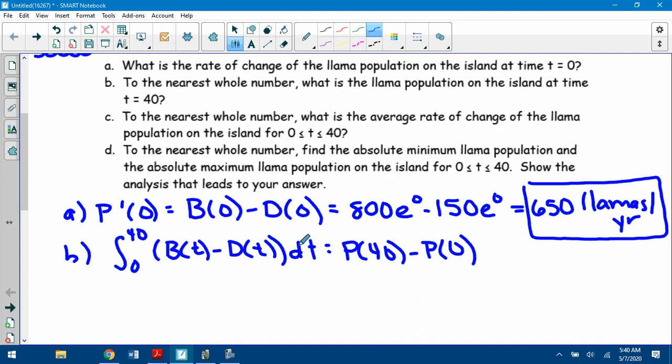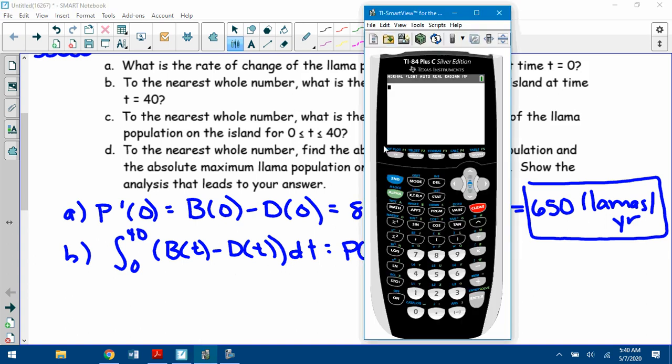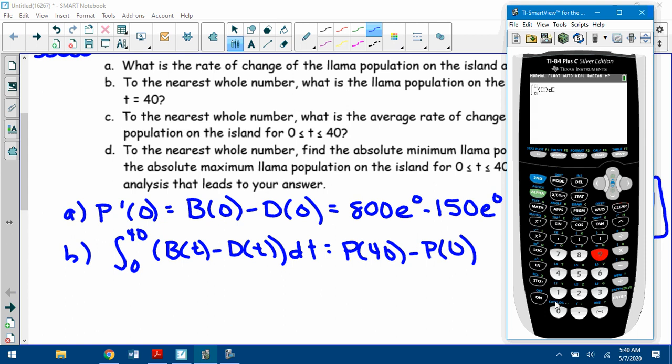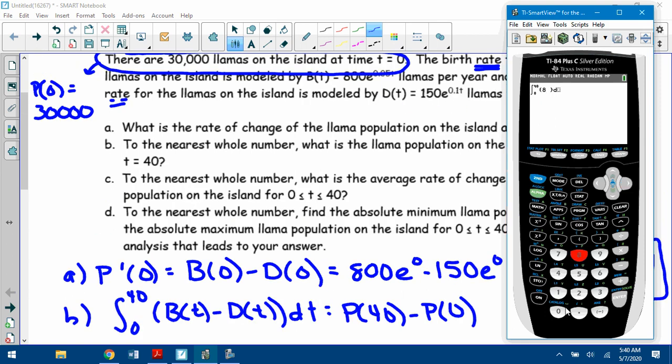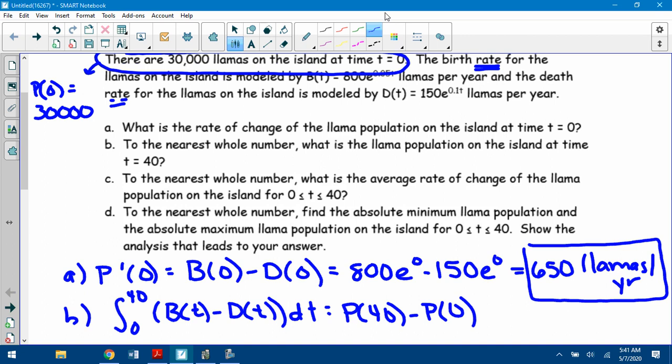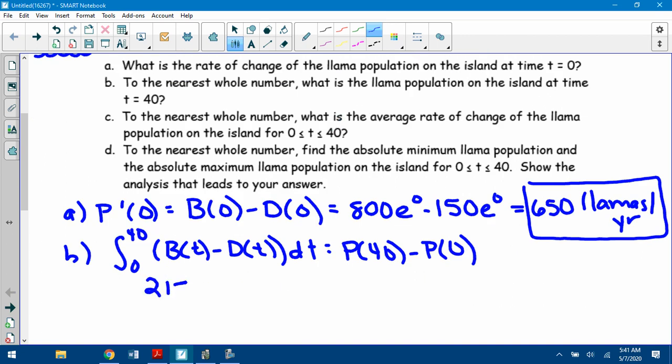So part B is where you would do the integral from 0 to 40 of B(t) minus D(t) dt is equal to the population of 40, which is what we want, minus the population of 0. Now, if you didn't write dt there, they're going to take off. And I took off for it on the test too, if you had missing dt's. Okay, so this is where I do Math 9. So if I do Math 9, and I go 0 to 40 of B(t), which again is 800 times e to the 0.05t minus 150 times e to the 0.1t. And this whole thing comes out to be 21,827.672.